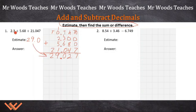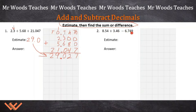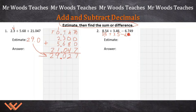If I would have rounded to 2.5, it probably would have been a little higher. It's still close — within tolerance. Let's evaluate the next problem. Number 2: 8 and 54 hundredths plus 3 and 46 hundredths minus 6 and 749 thousandths. For my estimate: 8.5 plus 3.5 is 12, minus 6.8 gives 5.2. That's my estimate.